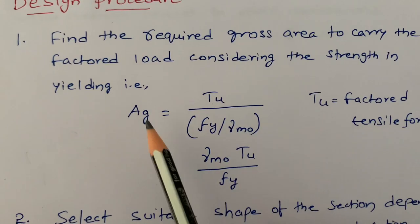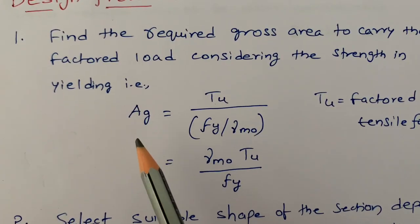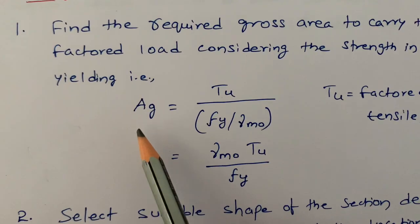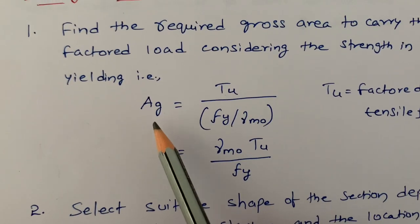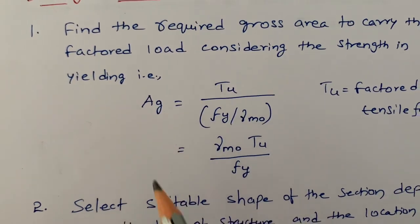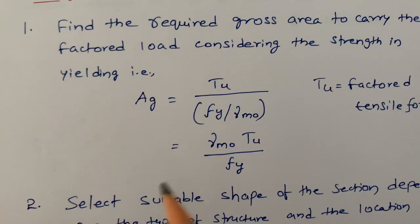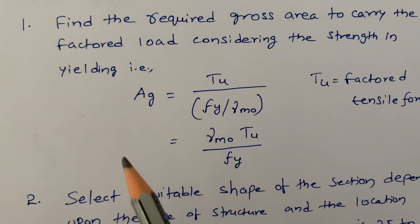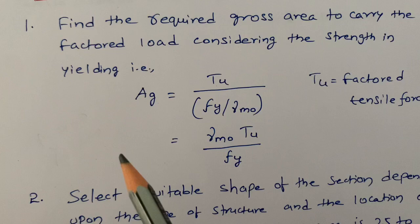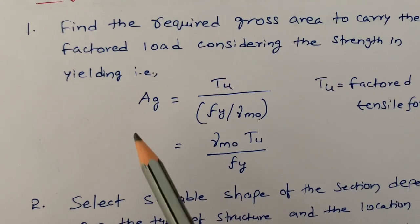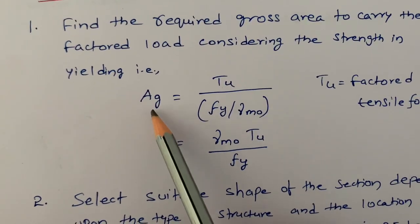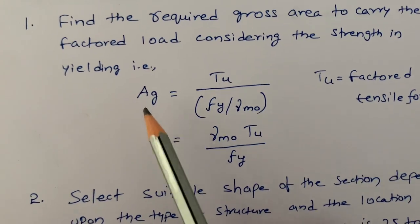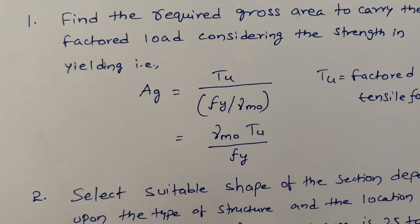Why do we calculate the gross area? After calculating this gross area, we need to choose the section which we are going to connect — whether to a column, a beam, or any other steel member. So for that purpose we need to calculate the gross area, and based on this gross area we are going to choose the section.